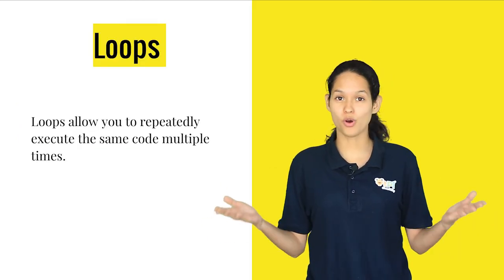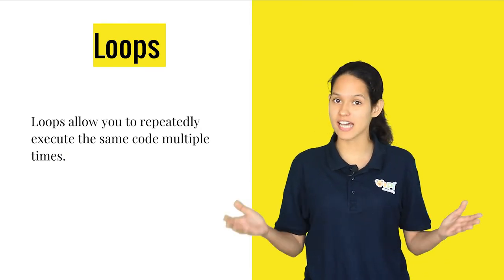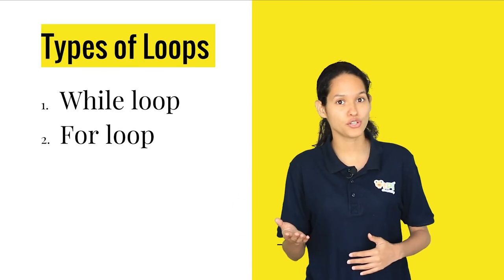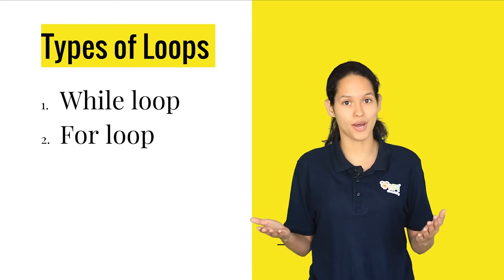Now that you all know what a loop is, let's take a look at what are the different types of loops. There are two different types, the for loop and the while loop.